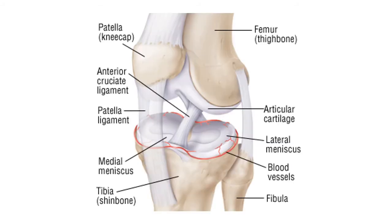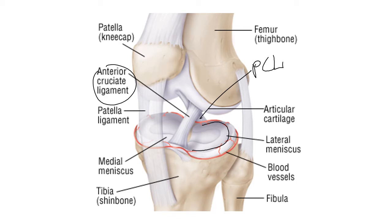This shows the ACL and PCL pretty well. Here's your ACL and this would be your PCL. Here's your meniscus, showing that there is blood flow into the meniscus. Both menisci are C-shaped inside the knee where the condyles of the femur fit down in there.